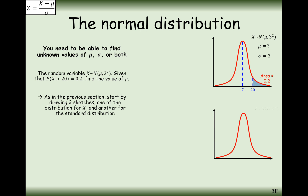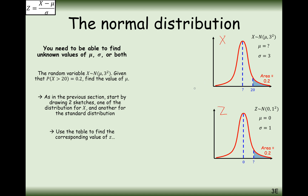On the top sketch we have our X distribution, where the probability of 20 or more is an area of 0.2, but we don't know the mean. On the bottom, the standard normal has a mean of 0 and standard deviation of 1, with some unknown marker above which the area is 0.2. The link between the two is Z equals X minus mu divided by sigma.